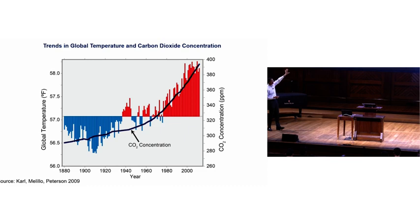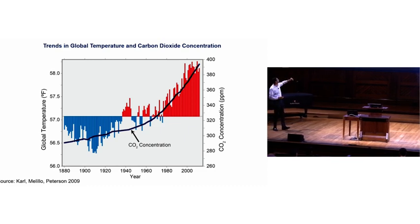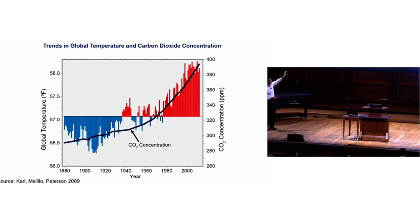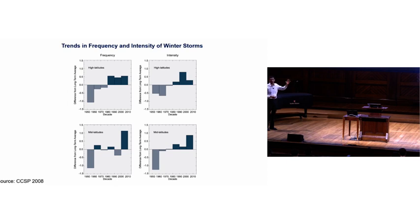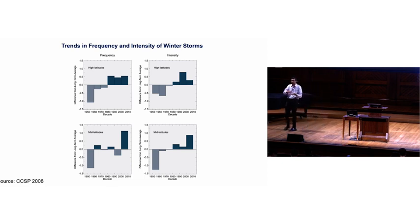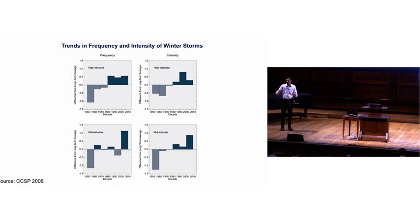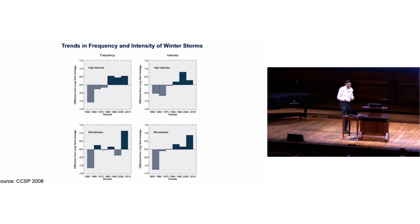Looking at the frequency and intensity of winter storms as one example: by decade, winter storms were below average frequency back in 1950, 1960, 1970, and then you can see significantly higher frequencies after that point. You not only have higher frequencies, you also have much more intense storms. So it's not just about an increase in mean temperatures — it's also about an increase in variance of climate. And that variance really matters, because extreme climate conditions create big costs for humans.